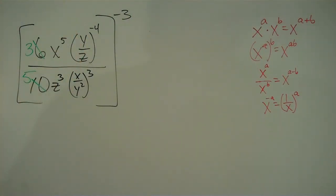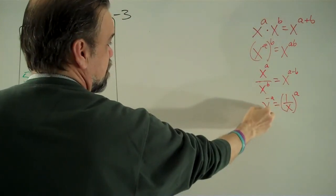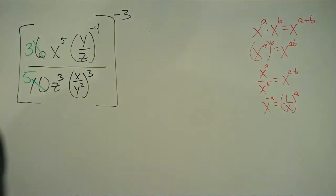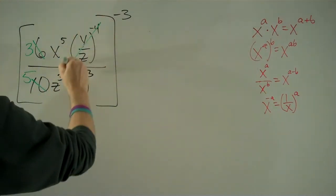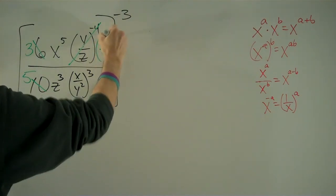Secondly, let's look at this piece here. If you remember, anything to a negative exponent is the reciprocal of that thing to the corresponding positive exponent. So if I have y over z to the negative fourth, I could just as easily call this z over y to the fourth.